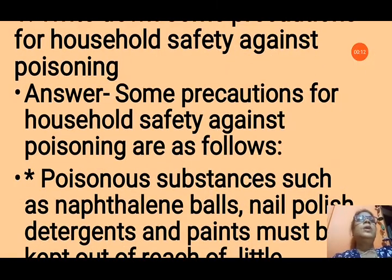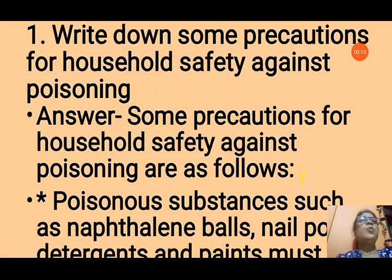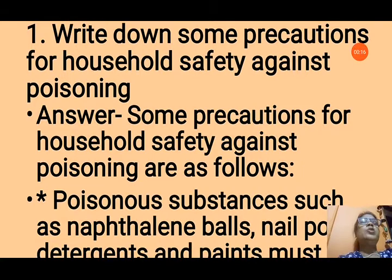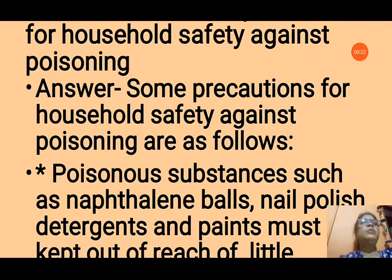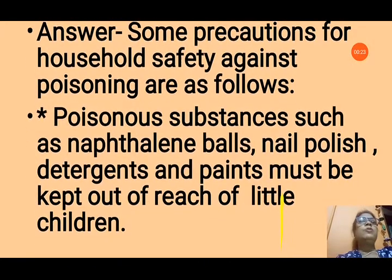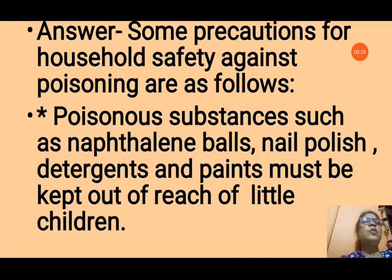Question number 1: Write down some precautions for household safety against poisoning. In households we use many things that can be poisonous. Some precautions are as follows. Poisonous substances such as naphthalene balls, nail polish, detergents and paints must be kept out of reach of little children because these are poisonous if taken.